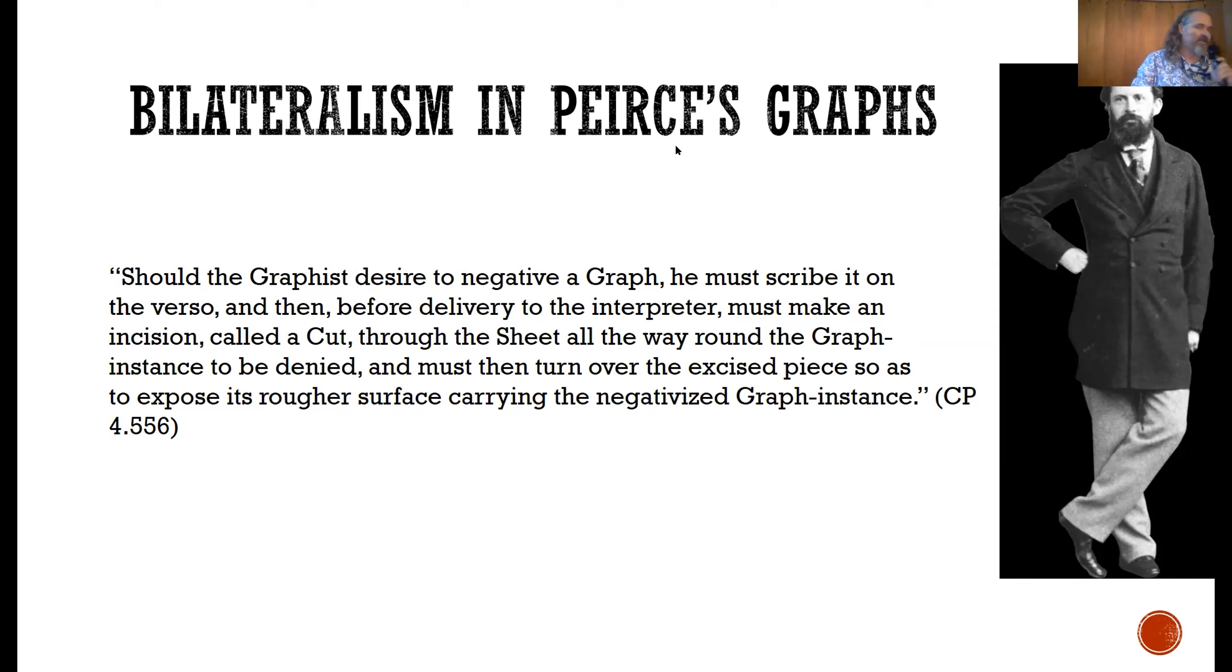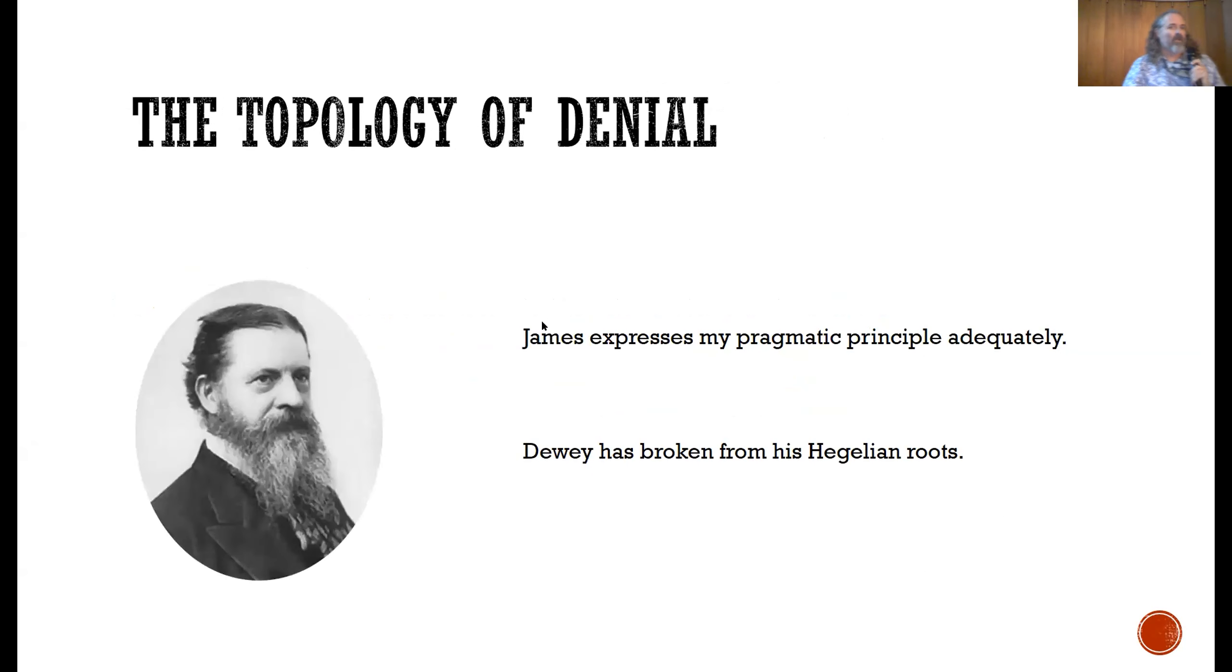So the question then arises is why couldn't you just, so to speak, work instead of from a sheet of assertion, from a sheet of denial? And making a medium-sized story short, this is where Peirce basically—he really thinks of the cut as being a cut in the sheet of assertion that exposes something from behind. The something from behind is the sheet of denial and what the cuts do is they expose what is lying behind that sheet of assertion. So the question is, and this is where Peirce turns out to be an out and out bilateralist, literally two sides to his phemic sheet. The question then arises is why doesn't Peirce consider operating instead from the opposite side, the obverse, the rougher side of the sheet of assertion? Why does he himself prioritize assertion over denial?